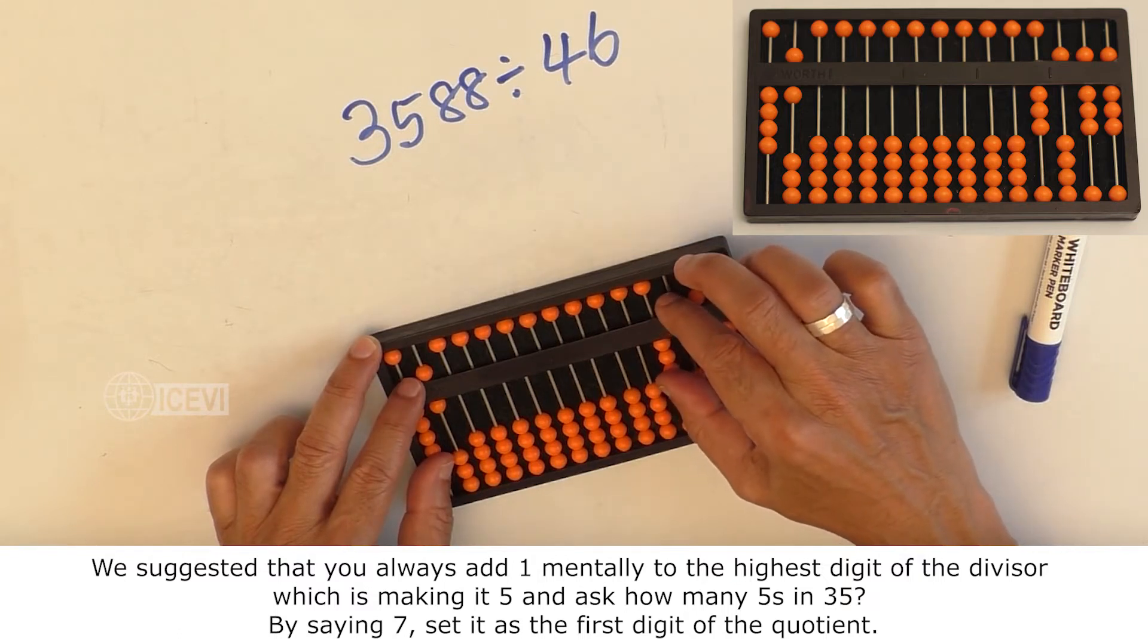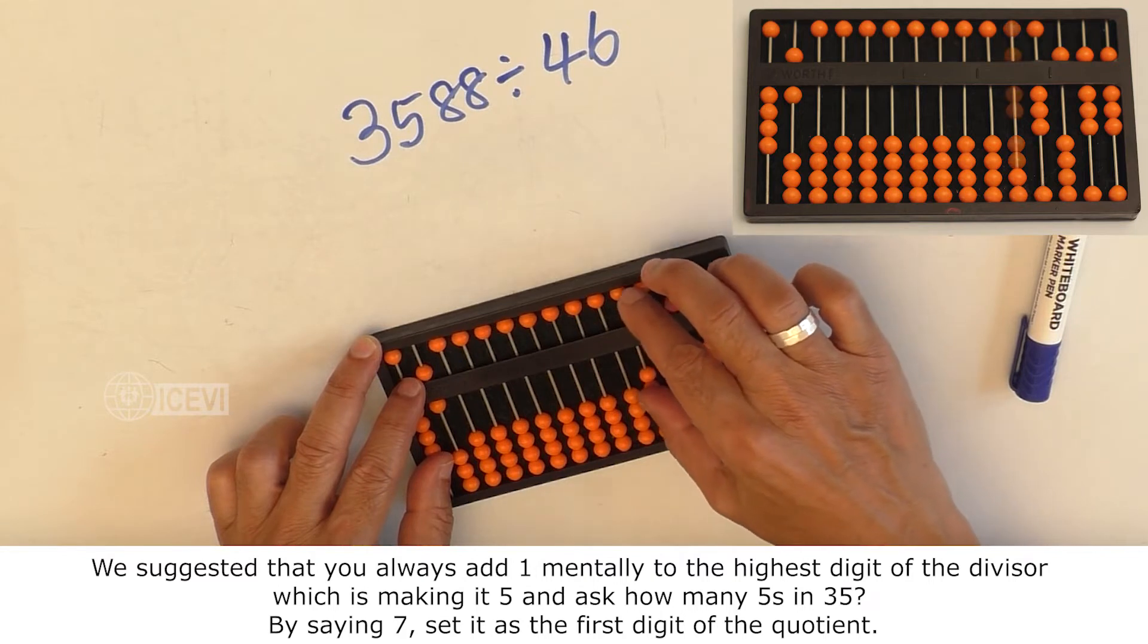By saying 7, set it as the first digit of the quotient.